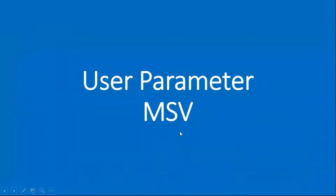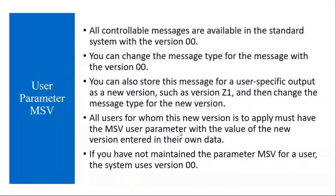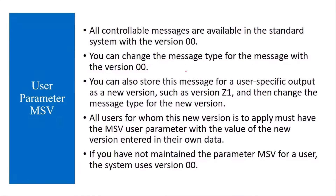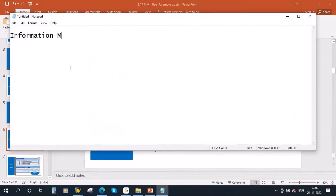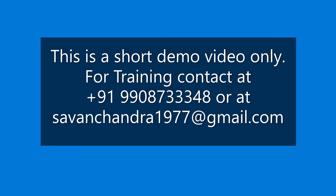Now we will talk about user parameter MSV. All controllable messages are available in the standard system with version 00. You can change the message type for messages with version 00. If you recall from our initial SAP navigation classes, we discussed three types of messages: information message (I), warning message (W), and error message (E). All these messages will have version 0.